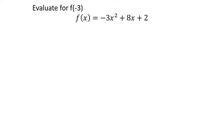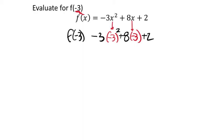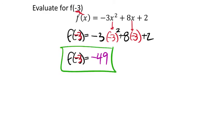Finally, evaluate f(−3) by replacing each x with negative three. Put the negative base in parentheses to avoid errors: (−3)³ + 8(−3) + 2. A common mistake seen on exams is forgetting those parentheses around the negative base. Plugging into the calculator gives f(−3) = −49. They may also ask for f(2) or f(0) — you're just replacing the x's each time.